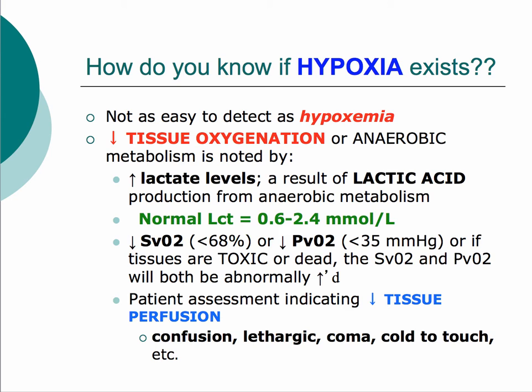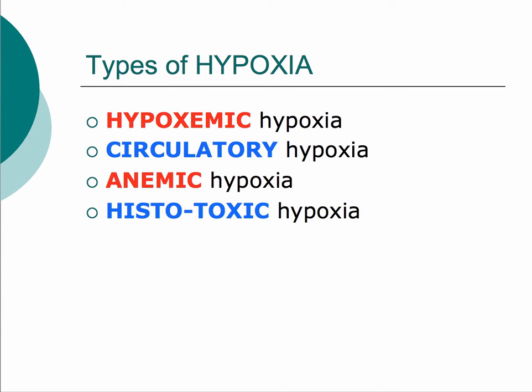That brings us to the four types of hypoxia: hypoxemic hypoxia, circulatory hypoxia, anemic hypoxia, and histotoxic hypoxia. Hypoxemic hypoxia is when someone has reduced oxygen in the blood — either PaO2, SaO2, or CaO2 — and that's the most common cause of hypoxia. The leading cause of hypoxemia is VQ mismatch, which is the relationship between ventilation and perfusion in the lung.